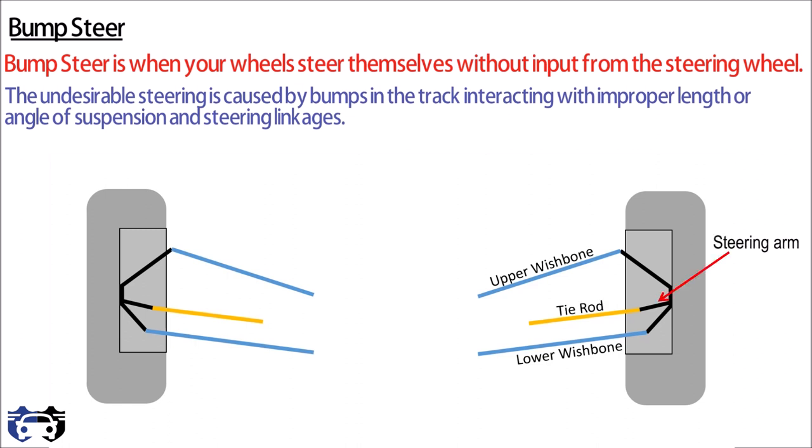The yellow line is the tie rod which is connected to steering arm on one side and with the steering rack on the other side. Now let's see some hard points that are used for adjusting the suspension and steering linkages.